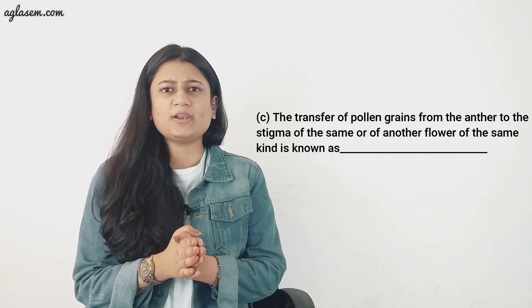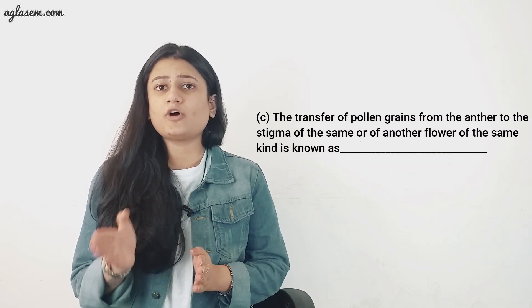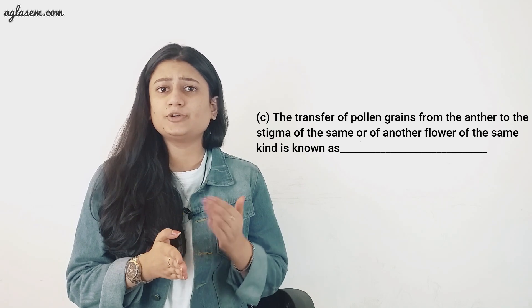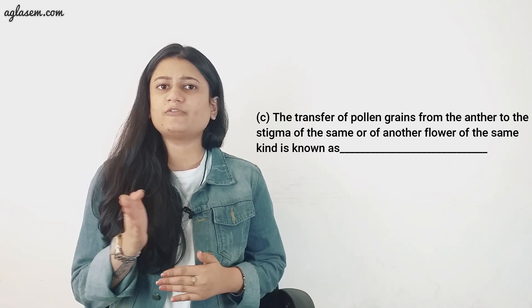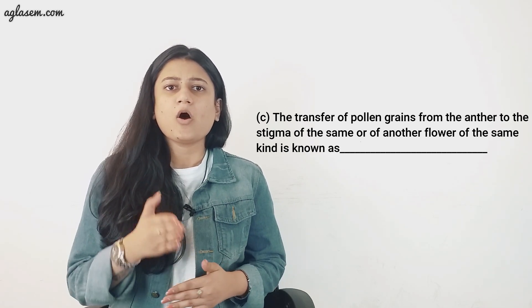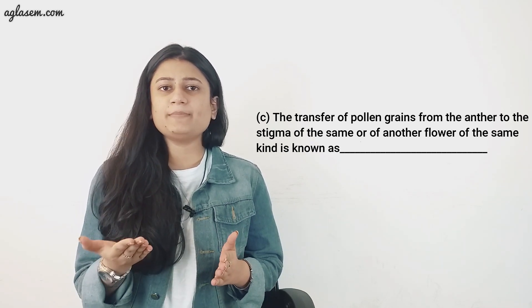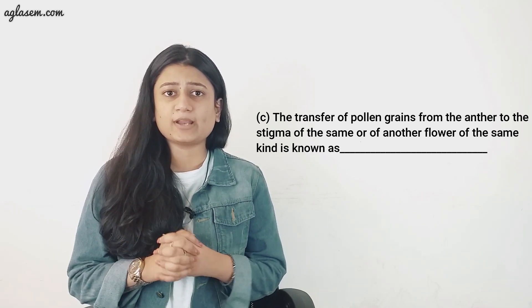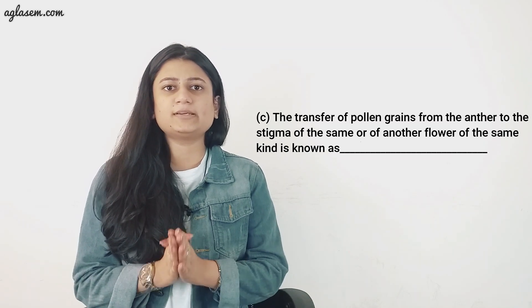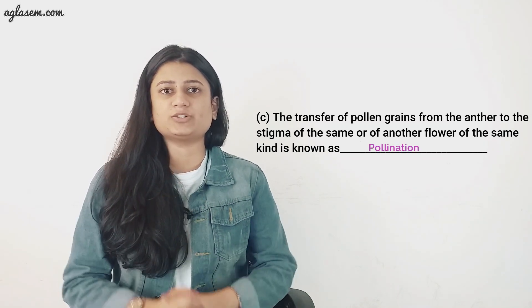Part c: The transfer of pollen grains from the anther to the stigma of the same or of another flower of the same kind is known as blank. Answer: pollination.